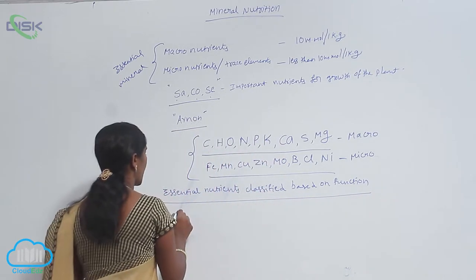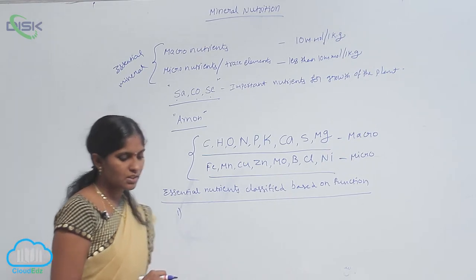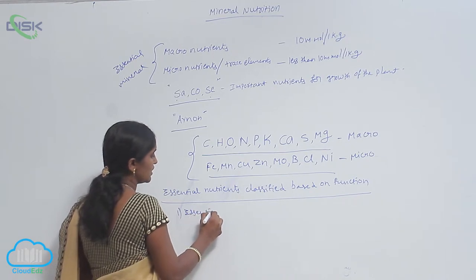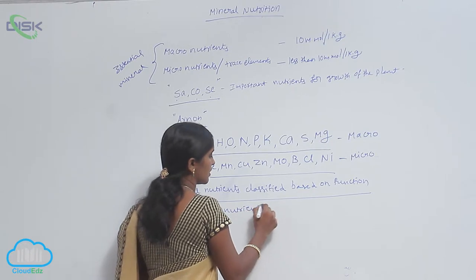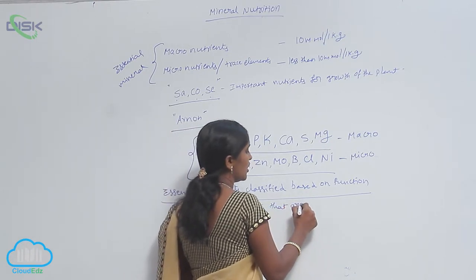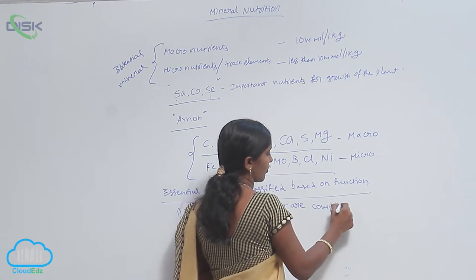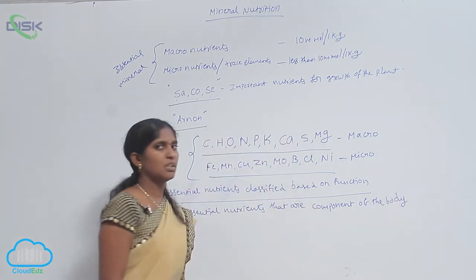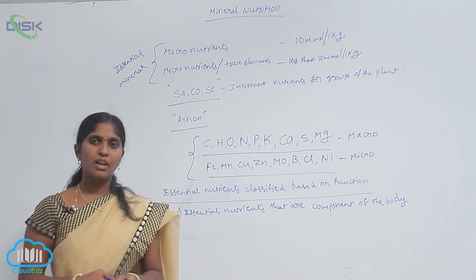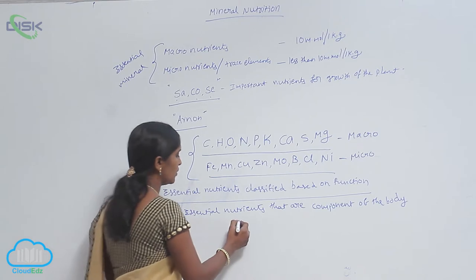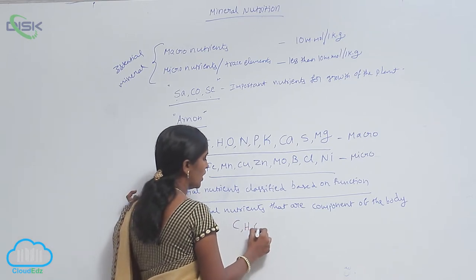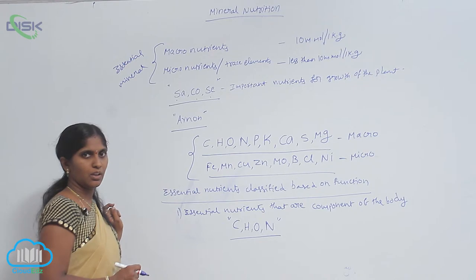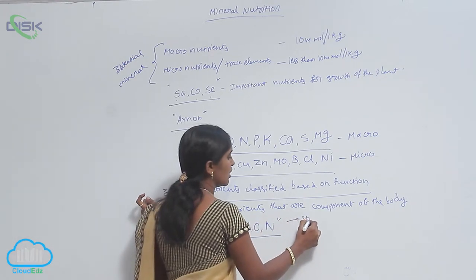First, the essential nutrients that are components of the body. What are the components of the body? Generally, the plant body is made of carbohydrates and hydrocarbons. C-H-O and N are also present as part of the plant body, meaning they are structural components.